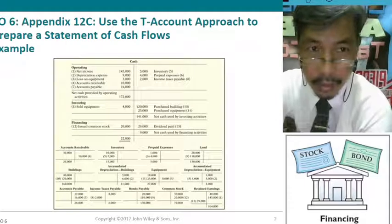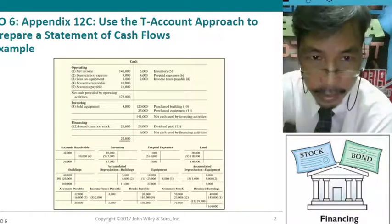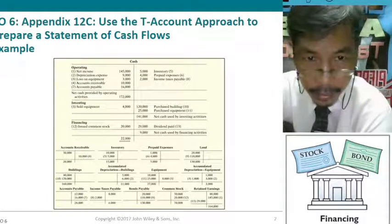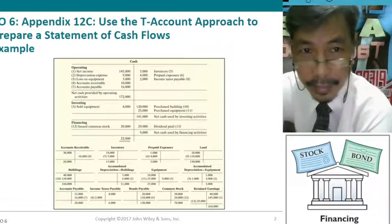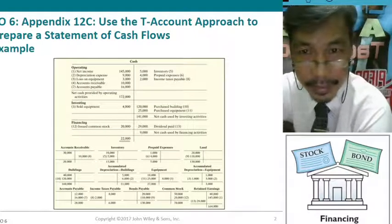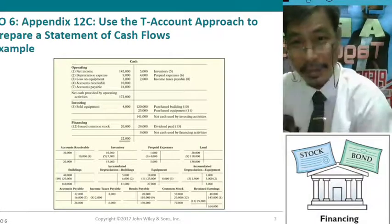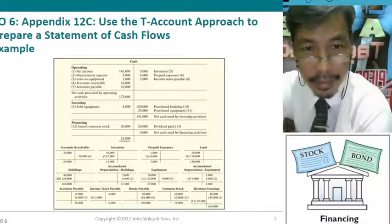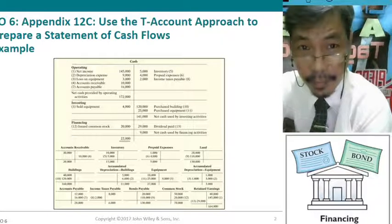So we use the T-account approach to prepare a statement of cash flow. We have the cash T-account here with operating, investing, and financing already categorized. So before putting it on the ledger or preparing the statement of cash flow report, these categories are already set up.